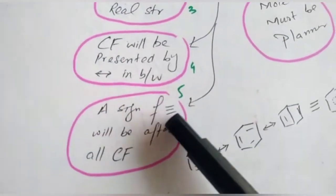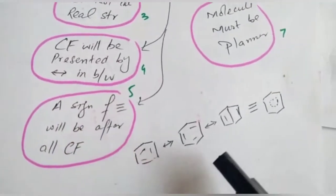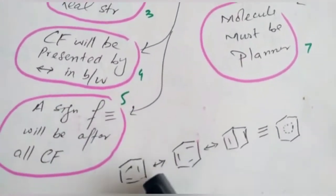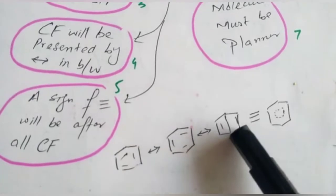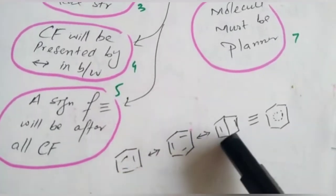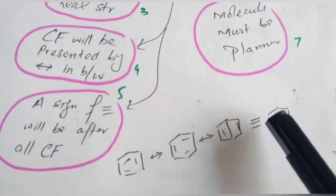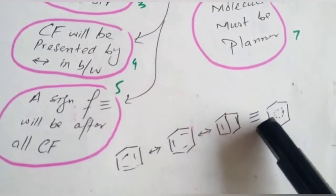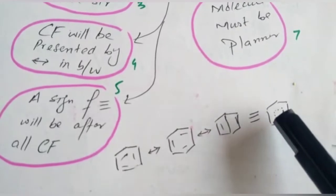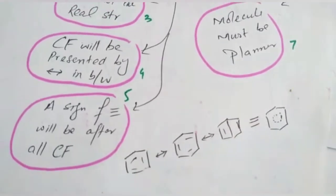A sign of triple star approximate will be present after all canonical forms. These are canonical forms and after all these canonical forms, this sign will be present. And this sign, the structure after this symbol means that this is resonance hybrid.